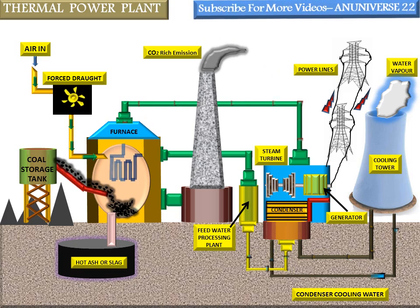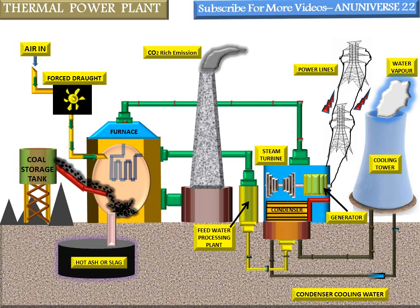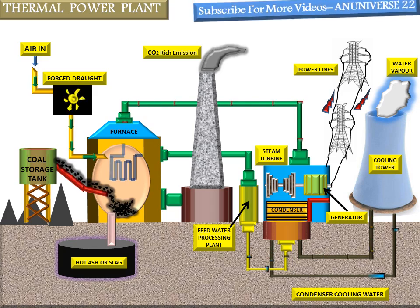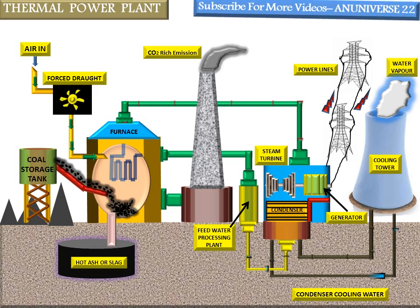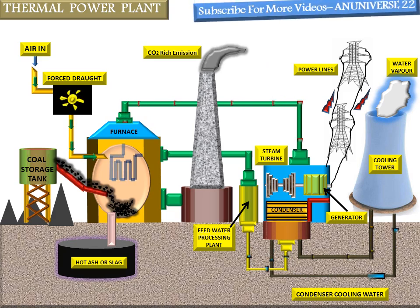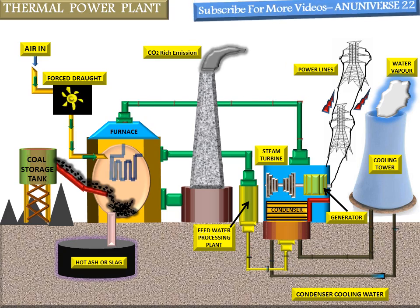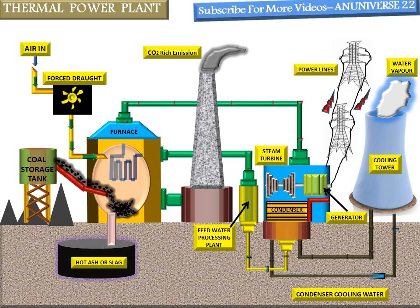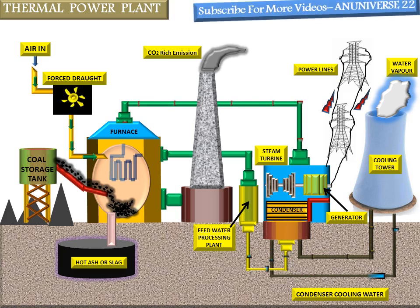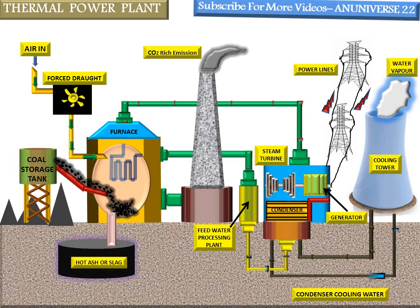There are basically two systems: the open system and the closed system for the cooling water circuit. If the quantity of water required to condense the steam is considerably large, then it is taken either from a lake or river. Water is taken from the upper side of the river, passed through the condenser, and the heated water is discharged to the lower side of the river. Such a system is possible if adequate cooling water is available throughout the year. But when adequate quantity of water is not available, water coming out from the condenser is cooled either in a cooling pond or cooling tower, with cooling affected by evaporating the water.